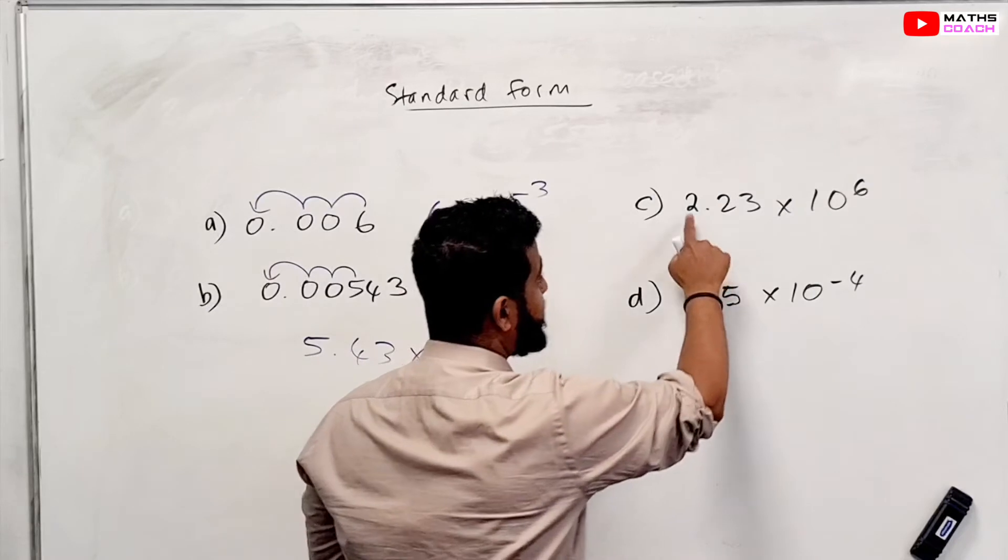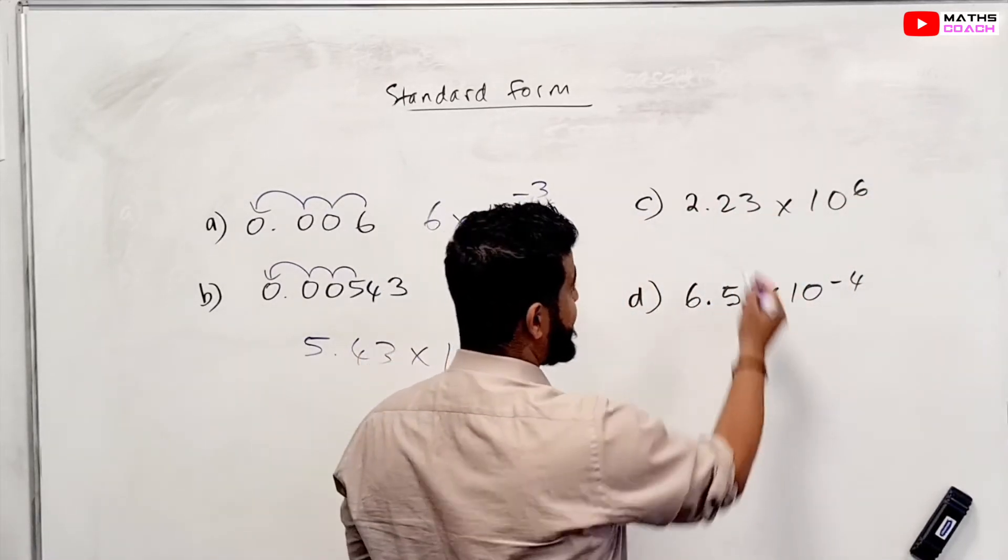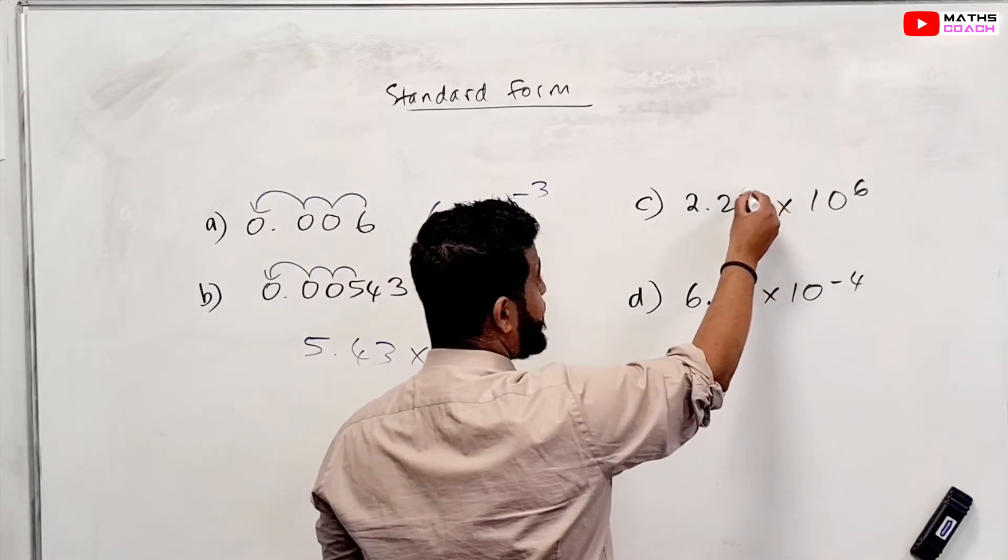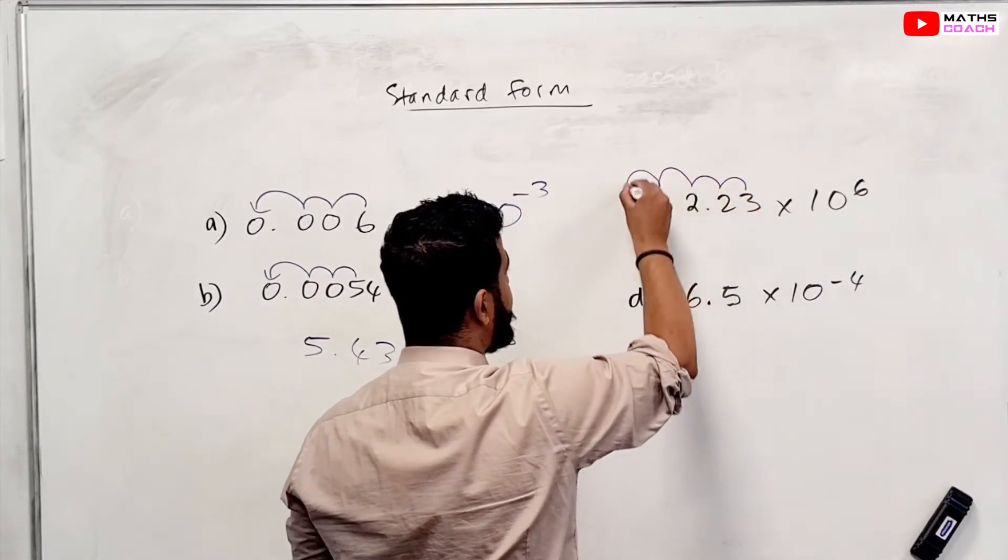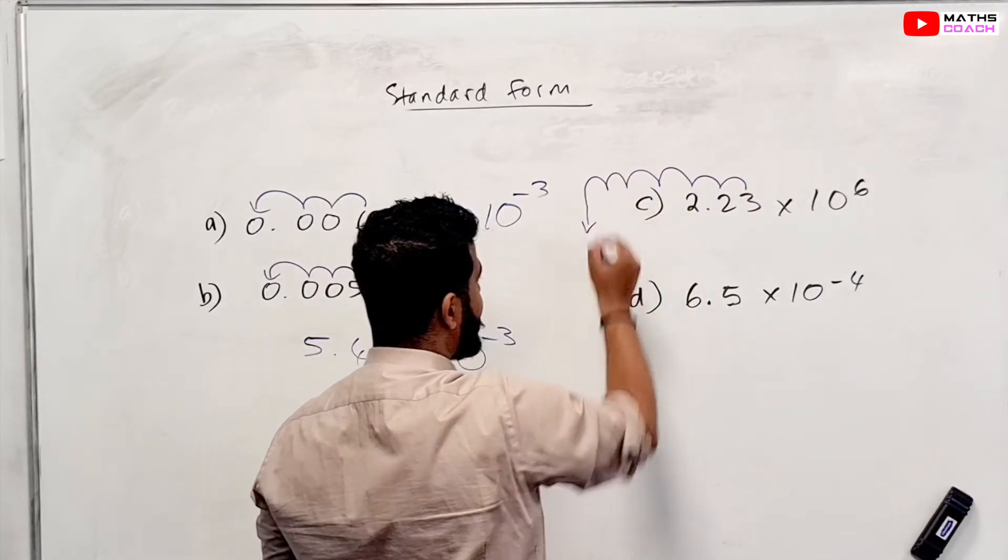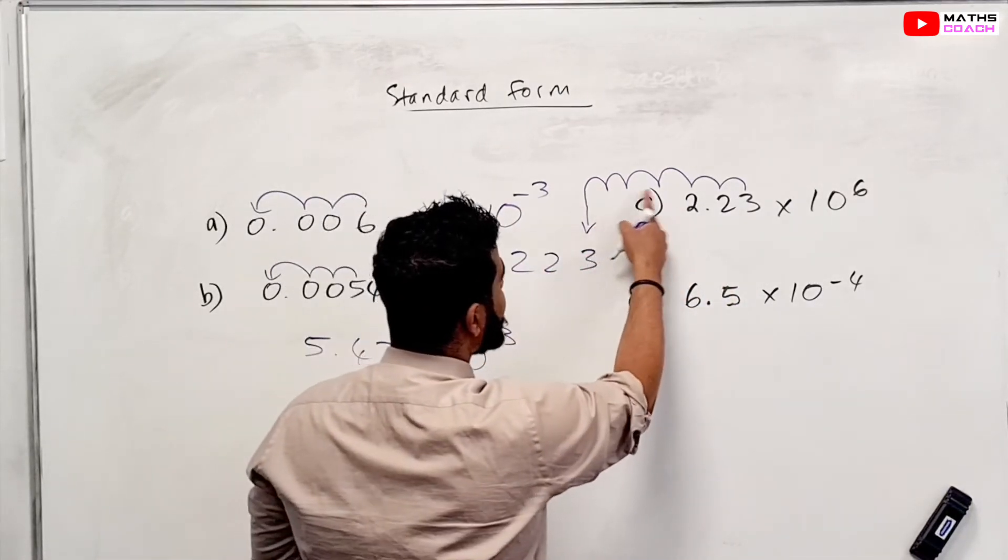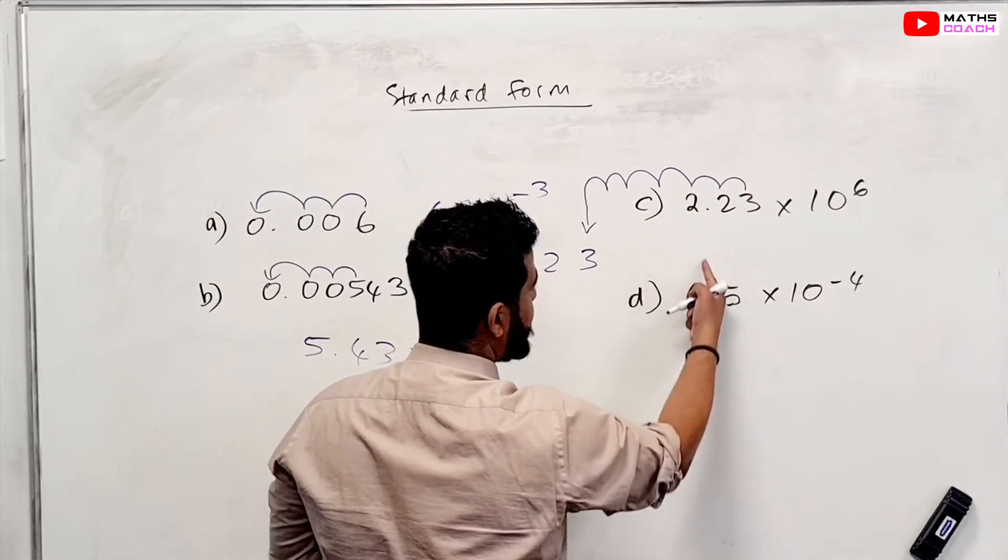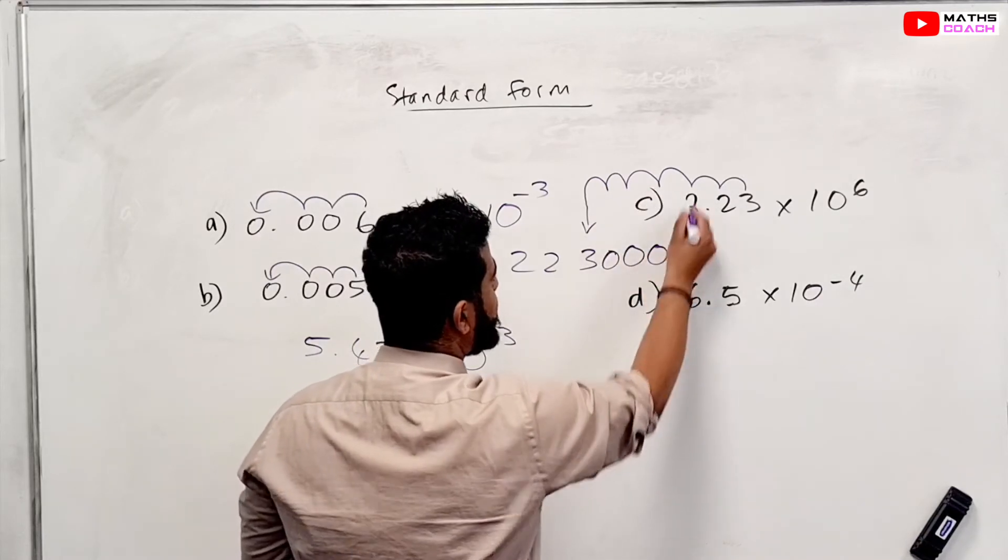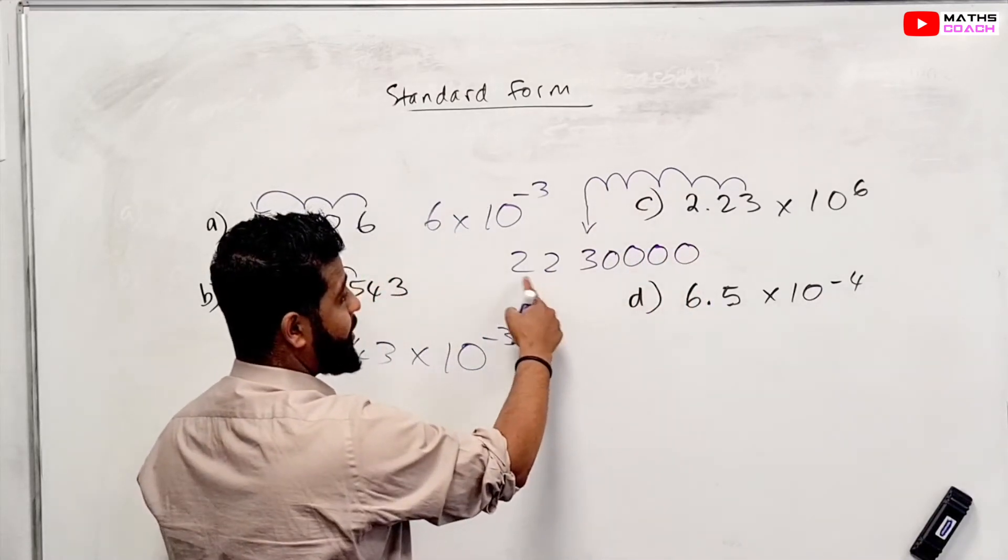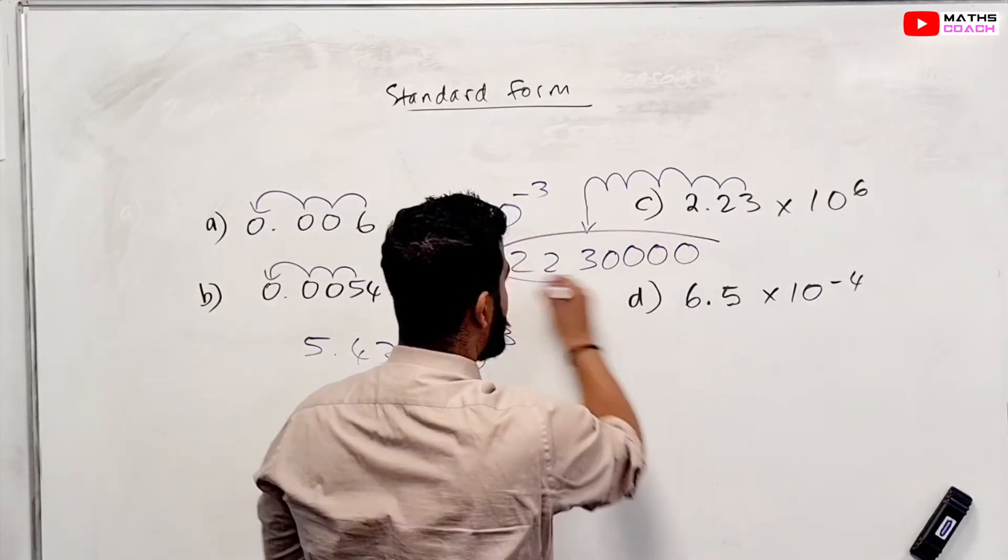This one, writing it in standard form. We have 2.23 times 10 to the power of 6. So we choose one of these values, and we move it six spaces. So if you choose 3, for example, and it's going to be positive, so therefore the number's going to get bigger. So 1, 2, 3, 4, 5, 6. Let's write it down here. So we get 3. The 2, 2 is going to push along, and all of these are going to have a 0 all the way up to this place. Obviously not here. So 1, 2, 3, and 4. So the answer is this value here, 2,230,000.